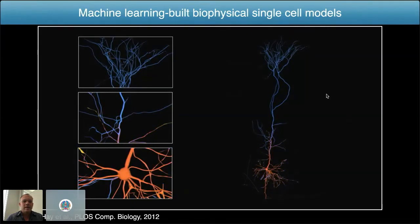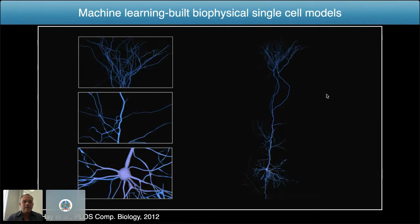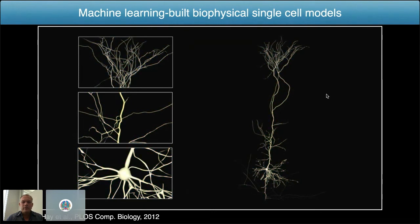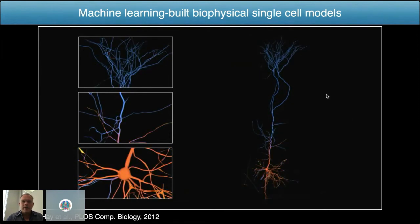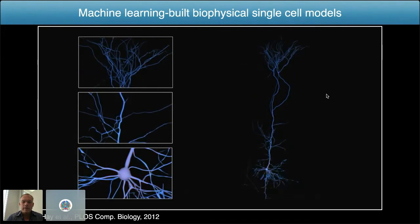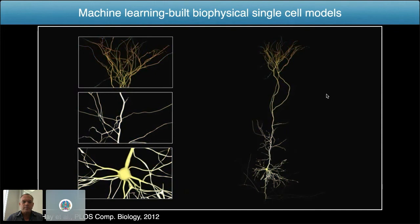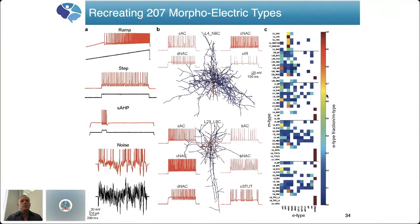This is an example of one of those neurons from Itai Hay — a beautiful layer five pyramidal cell with active dendrites, integrating synaptic input throughout the dendritic arbor. This approach was used to recreate the 207 morphoelectric types — that's 55 morphological types, 11 electrical types, and the combinations that exist result in 207 morphoelectric types of neuron.